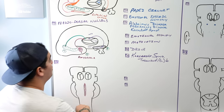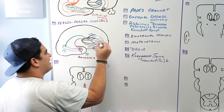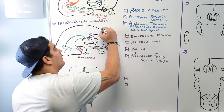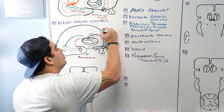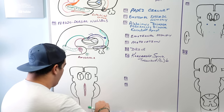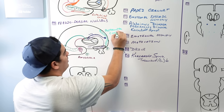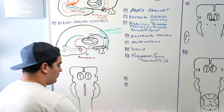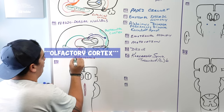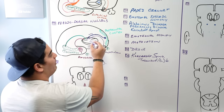Once the dorsomedial nucleus receives all of this input — emotional memory, motivation, drive, fear, anxiety, aggression — it takes that information and sends it to a particular area of the cerebrum: the prefrontal cortex. The prefrontal cortex is very important for attention, personality, abstract thinking, and the emotional component of memory. So the inputs are from the hippocampus, amygdala, and hypothalamus, and the output is to the prefrontal cortex.